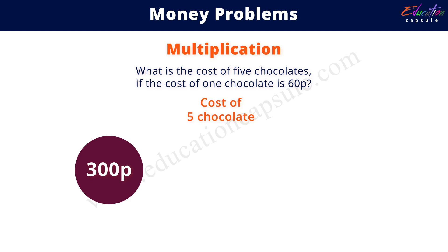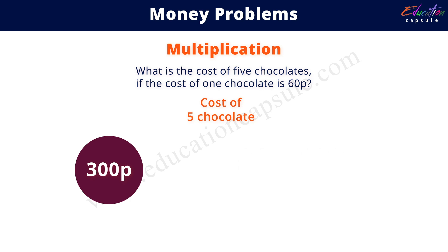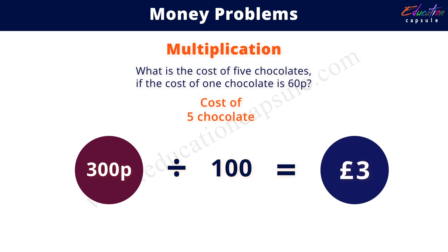We can also convert 300 pence into pounds if the question asks for the answer in pounds. Since one pound equals 100 pence, 300 pence divided by 100 equals 3 pounds.